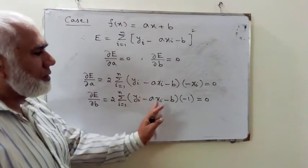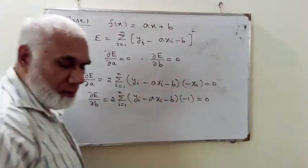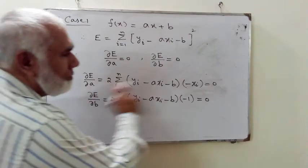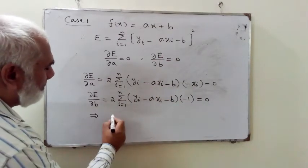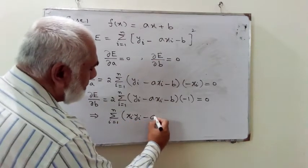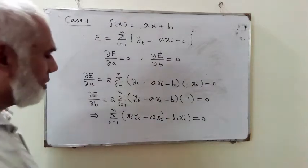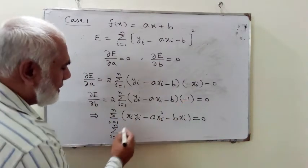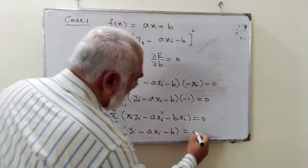We now have two equations to simplify. Dropping the factor of 2 and the minus sign, and taking xi inside the bracket, the first equation becomes: sigma (i=1 to n) of (xi*yi minus a*xi² minus b*xi) equals 0. From the second equation, similarly dropping the 2 and minus sign, we get: sigma (i=1 to n) of (yi minus a*xi minus b) equals 0.